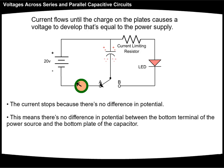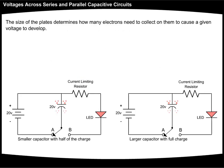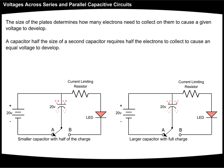This means there's no difference in potential between the bottom terminal of the power source and the bottom plate of the capacitor. There's also no difference in potential between the top plate of the power source and the top plate of the capacitor. The size of the plates determines how many electrons need to collect on them to cause a given voltage to develop. A capacitor half the size of a second capacitor requires half the electrons to collect to cause an equal voltage to develop.